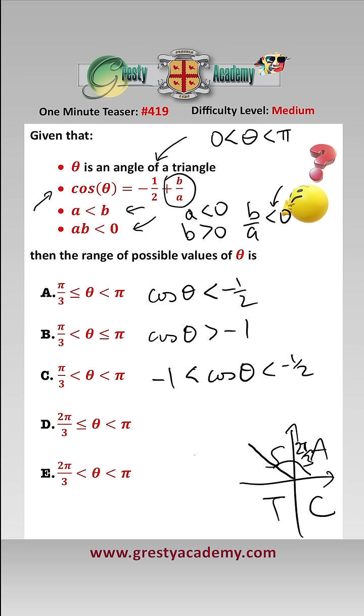So therefore we know that theta must be greater than 2 pi over 3 and less than pi, which is answer E.